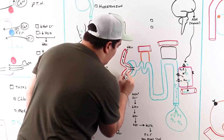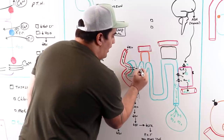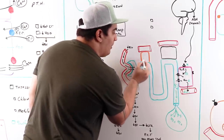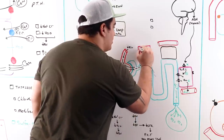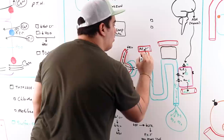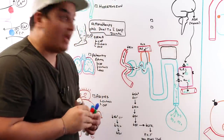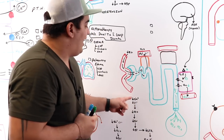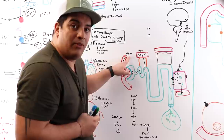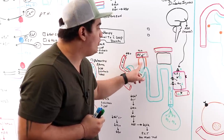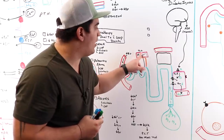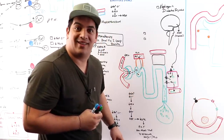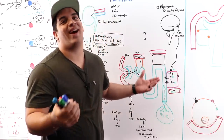Less filtrate moving into the proximal convoluted tubule means the PCT has more time to reabsorb sodium, chloride, and water. In nephrogenic DI, patients are losing tons of water and some salt. Giving thiazides induces mild hypovolemia, which triggers increased PCT reabsorption of sodium, chloride, and water — so less reaches the collecting duct, and less water is lost in the urine.